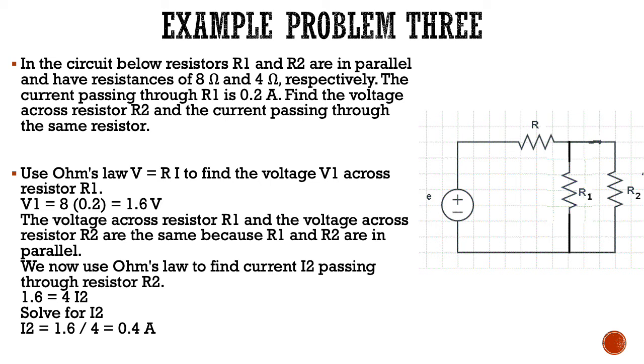Let's begin. We use Ohm's law, V equals IR, to find the voltage across V1. V1 equals 8 times 0.2 amps, which equals 1.6 volts. The voltage across resistor R1 and the voltage across resistor R2 are the same because they're in parallel. So we now use Ohm's law to find the current I2 passing through resistor 2.